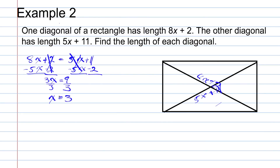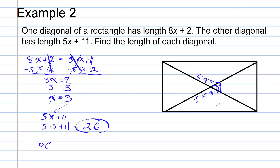Now I want to caution you — X equals 3 is not the final answer. This is the value of X that will make this a rectangle. We need to substitute X back into either 8X plus 2 or 5X plus 11. Using 5X plus 11: substituting 3 in gives us 5 times 3 plus 11, which simplifies to 26. So the length of the diagonal should be 26. We can check by substituting into 8X plus 2: 8 times 3 is 24, and 24 plus 2 is 26. Both diagonals have a length of 26.